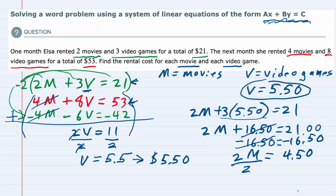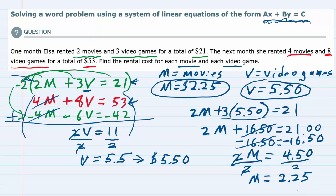And then lastly, divide by 2 to get the M by itself, and we have M equals 2.25. So M equals 2 dollars and 25 cents. And if we wanted to check this, we could substitute both of those values into either one of these two original equations, and we would get a true statement.